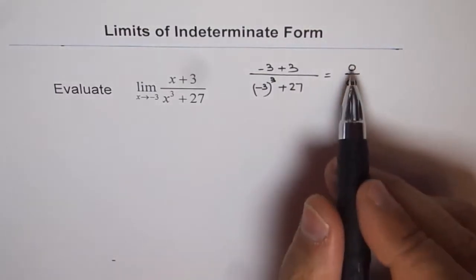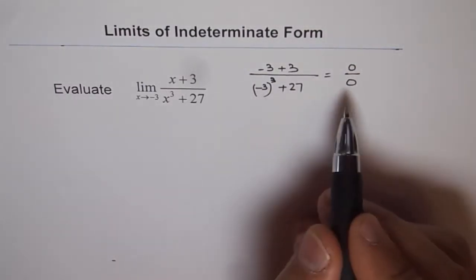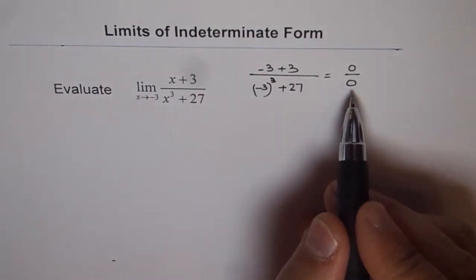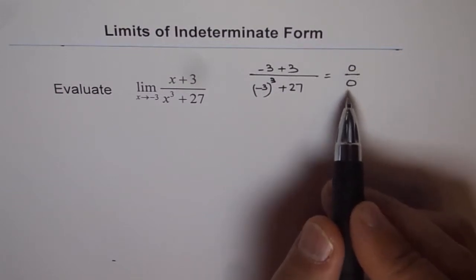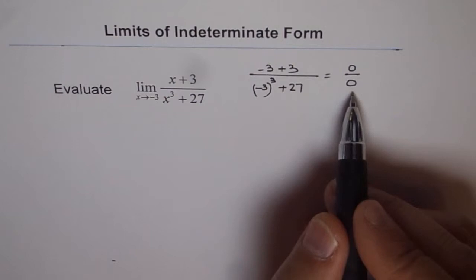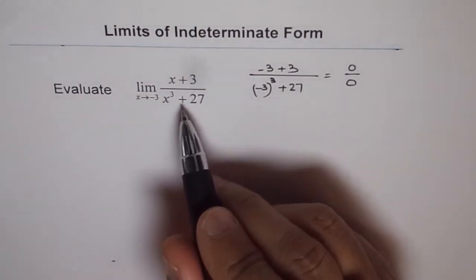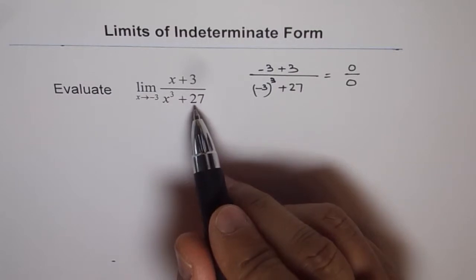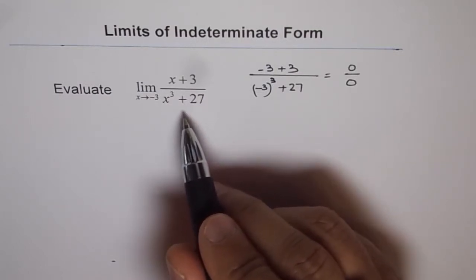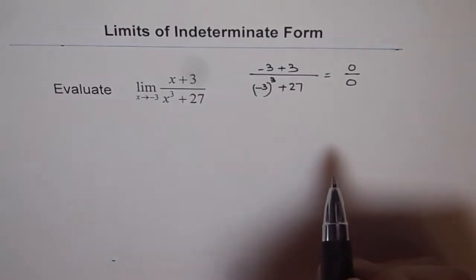Now if we get 0 over 0 by substituting the limiting value, that means it is indeterminate form. This gives us an idea that we have a factor x plus 3 in the numerator and also a factor x plus 3 in the denominator. If we could simplify and factor those out and cancel them, then we can solve the question.